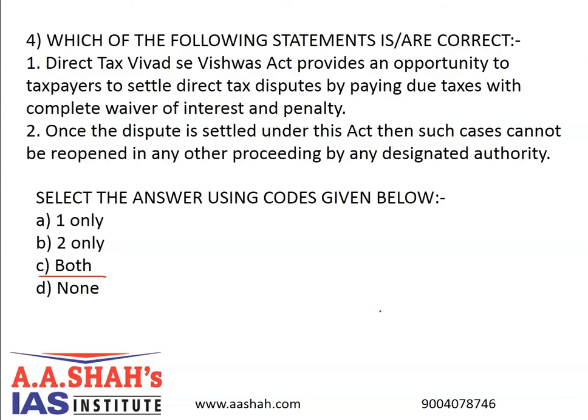When tax arrears relate to disputed interest or penalty only, then 25% of the disputed penalty or interest shall have to be paid if payment is made by June 30, 2020, beyond which it shall be enhanced to 30%. Disputes not covered under this Act are those where prosecution has been initiated before the declaration is filed, involving persons convicted or being prosecuted for offences under certain laws such as the Indian Penal Code, or for enforcement of civil liabilities and involving undisclosed foreign income or assets.